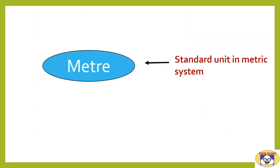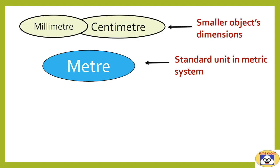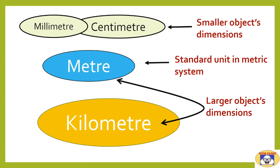The standard unit in the metric system for the measurement of length is meter. For measuring smaller objects, millimeter and centimeter are used, while meters and kilometers are used for the measurements of larger object dimensions or for distance measurements.